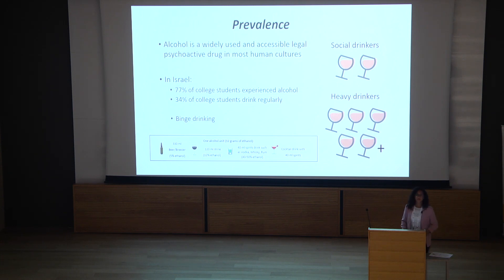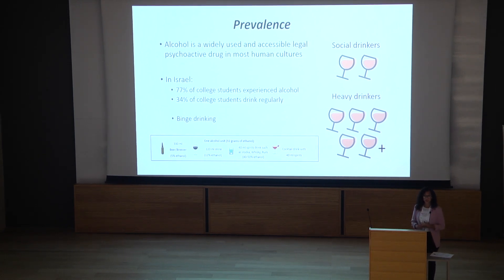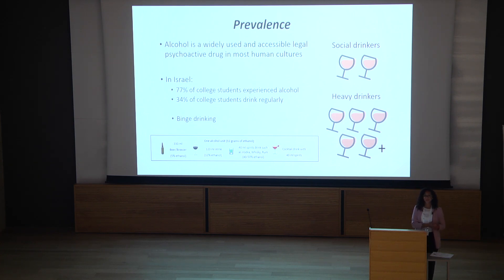Since it's legal and widely used, it's very culturally acceptable. Around 70% of young adults drink alcohol on a regular basis. Most people are social drinkers — they drink between one to two units of alcohol. One unit contains 12 grams of ethanol, for example a third of a beer, a small glass of wine, or a shot of vodka. Heavy drinkers engage in binge drinking episodes, which include at least four units for women and five for men. And if you're a really heavy drinker, you drink at least 21 units per week.